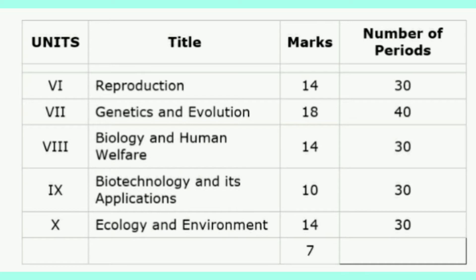In unit six you have the reproduction chapter that carries 14 marks. Unit seven, genetics and evolution, carries 18 marks. Unit eight, biology and human welfare, carries 14 marks. Unit nine, biotechnology and its applications, carries 10 marks. And finally unit ten, ecology and environment, has 14 marks.